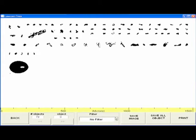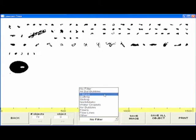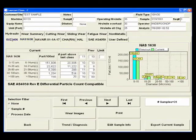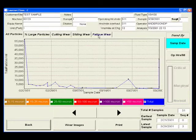Specialized software automatically sorts the particles into five categories, something which no other particle counter on the market is capable of. This technology enables the LNF to more accurately determine the particle concentration as well as classify the particles according to type of wear and size.